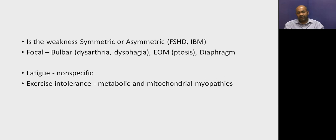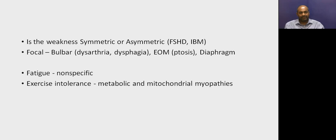Once we identify the weakness, we should ask whether the onset was symmetric or asymmetric. Most muscle disorders are symmetric. There are very rare causes of asymmetric weakness, like FSHD and inclusion body myositis. Patients can also present with focal muscle weakness, such as isolated bulbar weakness — dysarthria or dysphagia — or with extraocular involvement like ptosis, or rarely isolated diaphragmatic weakness alone.